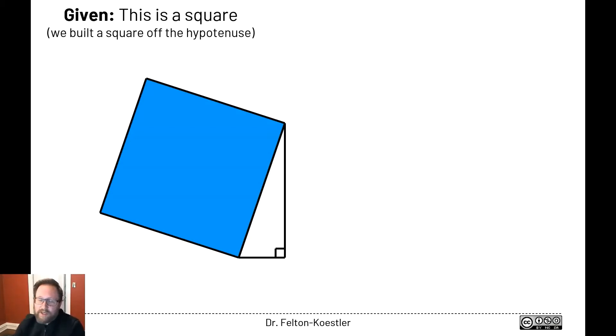At the beginning of this proof or argument, it's not quite a proof yet, but at the beginning of this argument we said this is a square. We said from the beginning we're going to build a square off the hypotenuse, therefore we know that the corners in this shape are right angles.